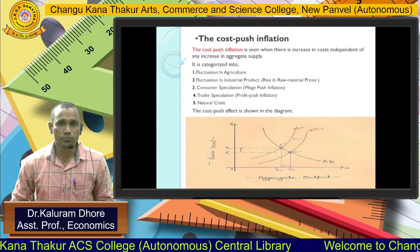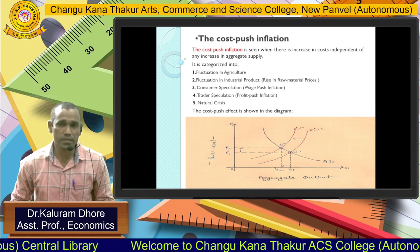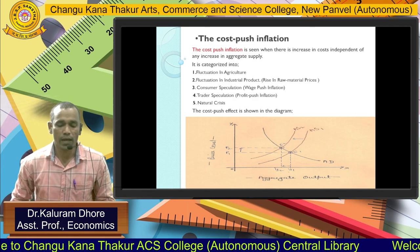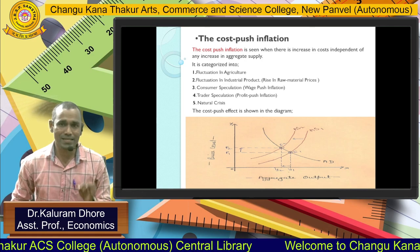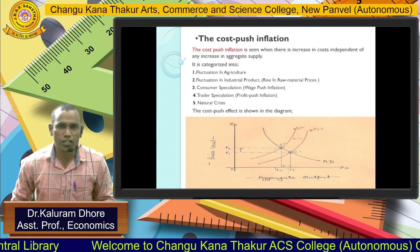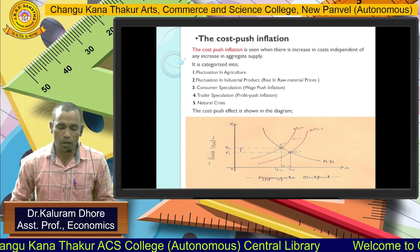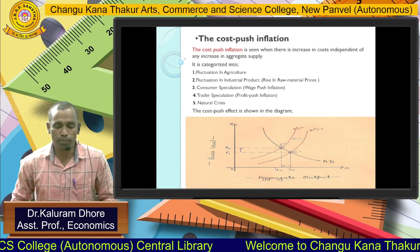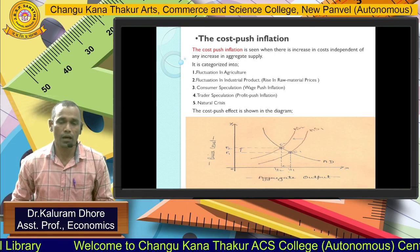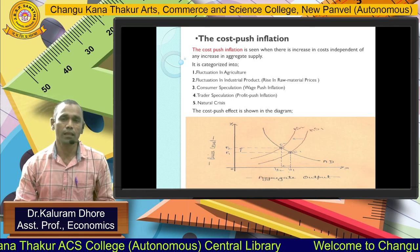The second category is cost-push inflation. Cost-push inflation occurs when there is an increase in cost independent of any increase in aggregate supply. The causes include: fluctuation in agriculture, fluctuation in industrial products, rise in raw material prices, consumer fluctuation, wage-push inflation, trader speculation, profit-push inflation, and natural crises. These points cover both demand-pull inflation and cost-push inflation categories.